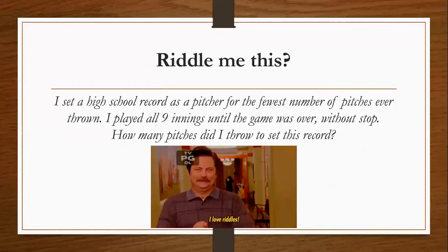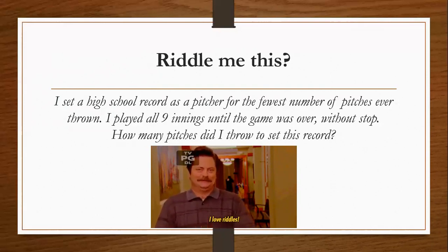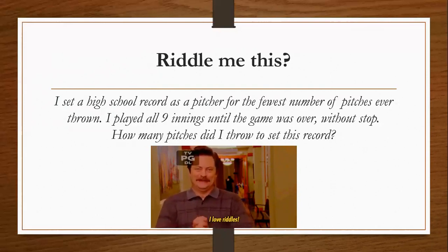The correct answer is 25. The first eight innings I kept throwing one pitch — it would be hit and caught, leading to an out. Three pitches per inning, three outs, pretty quick: 24. Unfortunately, first pitch, bottom of the ninth, they hit a home run — so by pitch 25, the game was over.